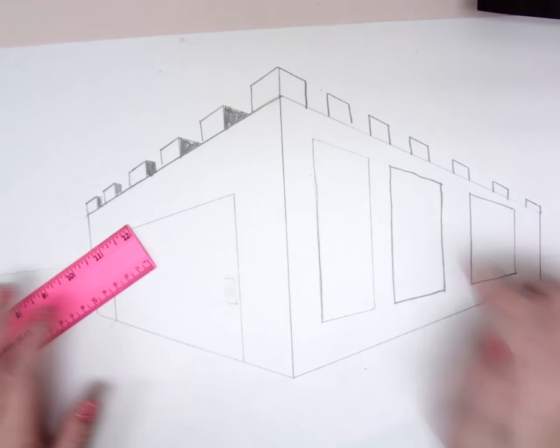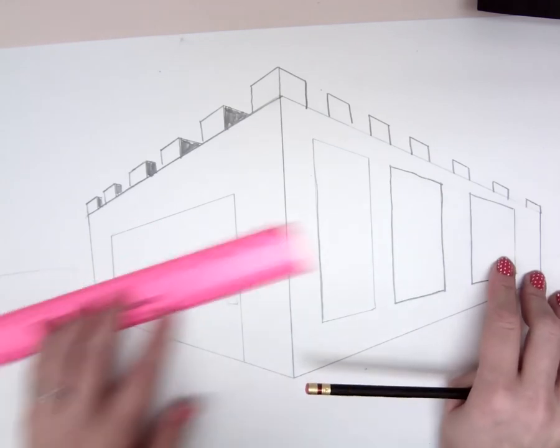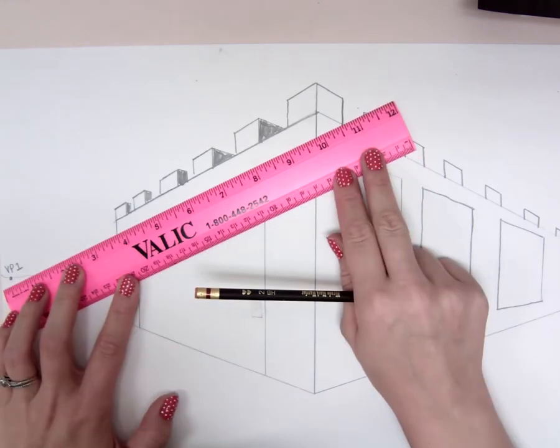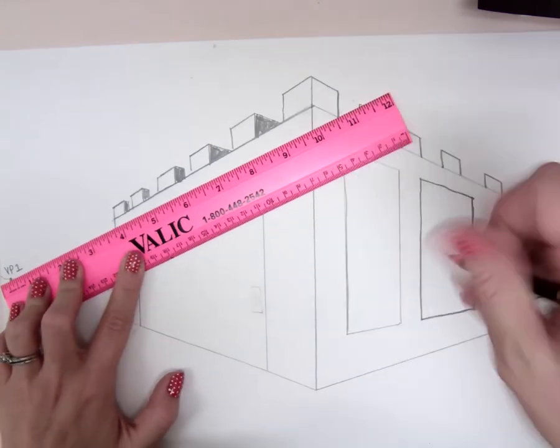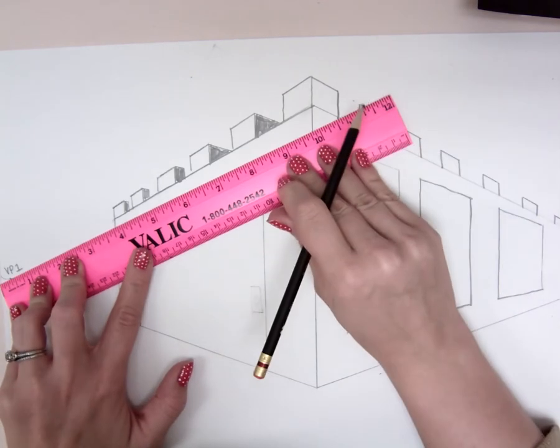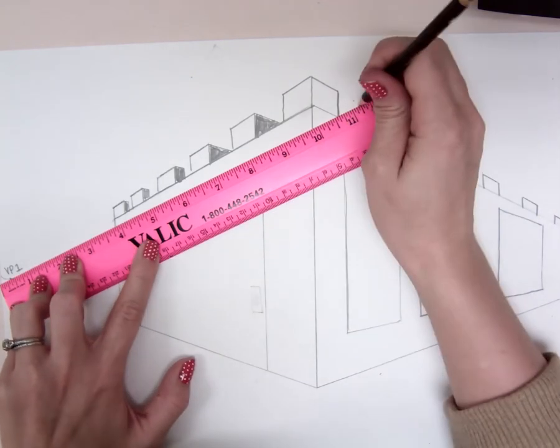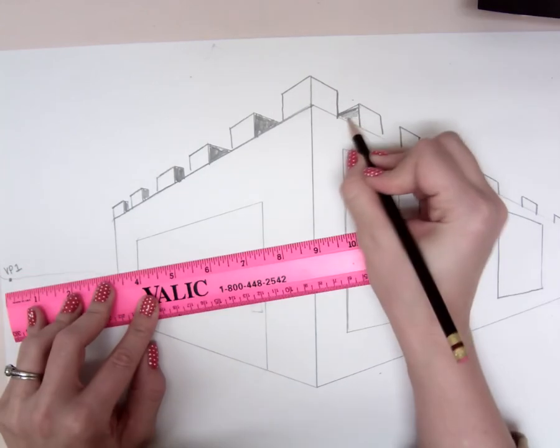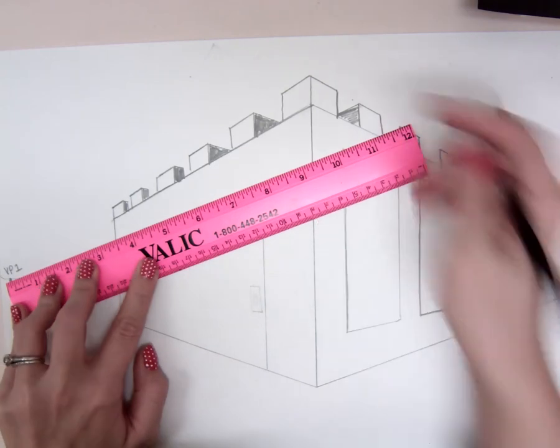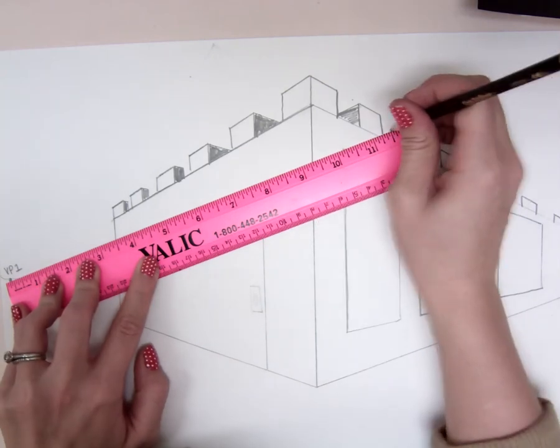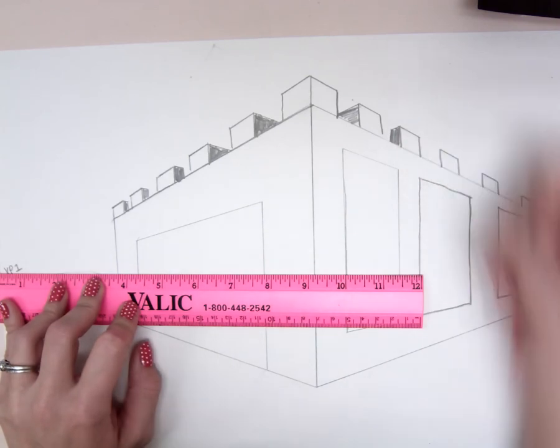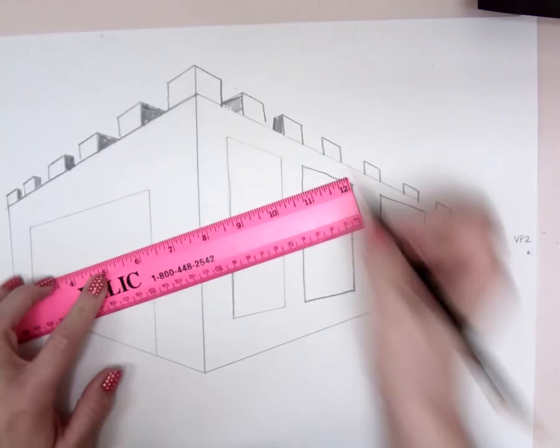To make the right side look three-dimensional, line up your ruler with your first vanishing point. Depending on how you want it to look, from the corner of each of these bricks, you either draw a continuous line and shade it in, or you draw a shortened version, just a short line, then draw a vertical line. Remember, vertical lines are parallel, so they should match up. And you just keep going along like that.